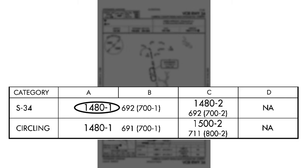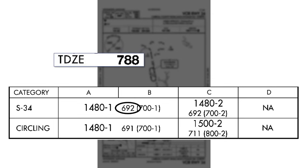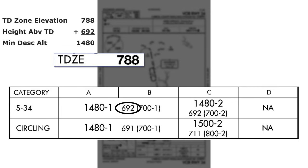The dash-one means the minimum visibility is one statute mile. Over on the right, the figure called height above the threshold is 692 feet — whereas 1,480 is what you read off the altimeter in MSL, the 692 is essentially above ground level. To bring the concept home: take the touchdown zone elevation of 788 feet, add the height above the threshold of 692, and you get the minimum descent altitude of 1,480. If you ever have confusion about these numbers, just work out those relationships by adding or subtracting two of them.